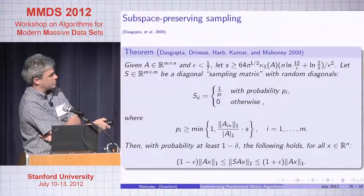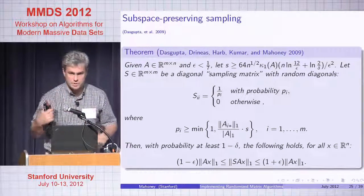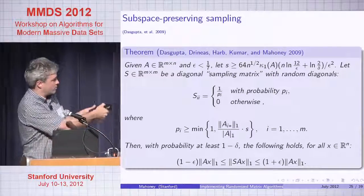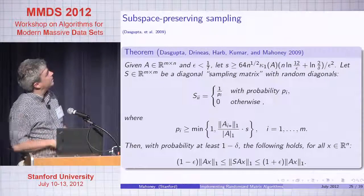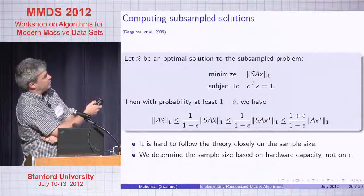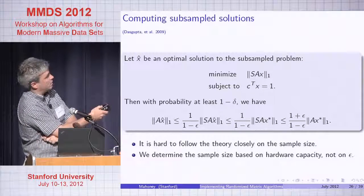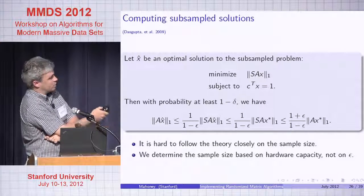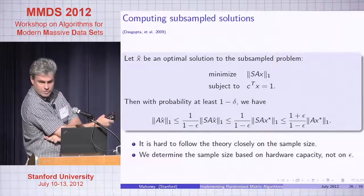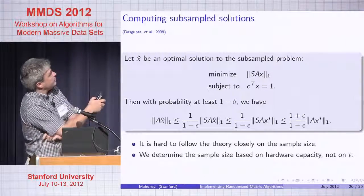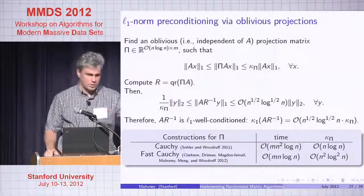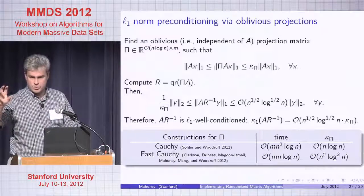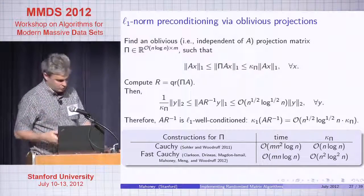If you sample with the probability distribution depending on the non-uniformity structure, you preserve the subspace. If you let x-hat be the optimal solution to the subsampled problem, then with high probability you'll be within 1 plus epsilon — exactly the relative error approximation you want. You can do this with an oblivious L1 projection — an L1 analog of a Gaussian — or with some form of rounding or conditioning.